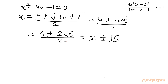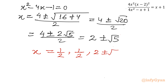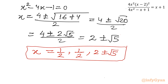We have calculated all four real solutions: x equals one half with multiplicity 2, and x equals 2 plus root 5 and 2 minus root 5. I hope you liked this video — thank you so much for watching, do not forget to like, share, and subscribe. Bye bye till the next video, good luck.